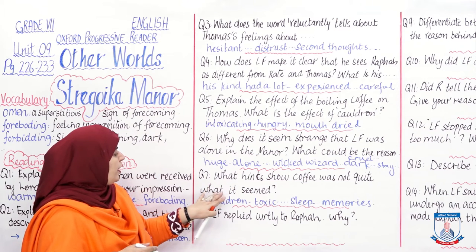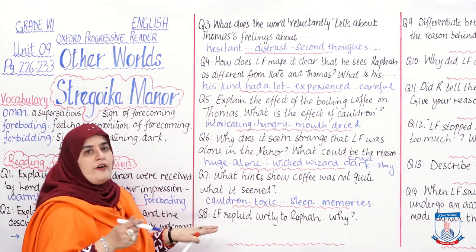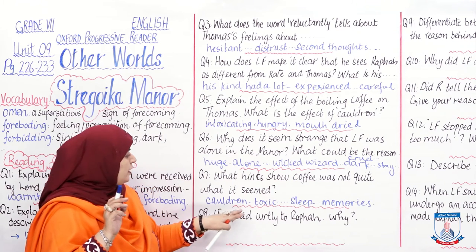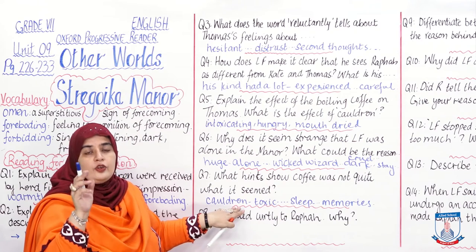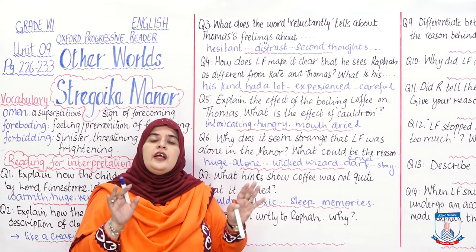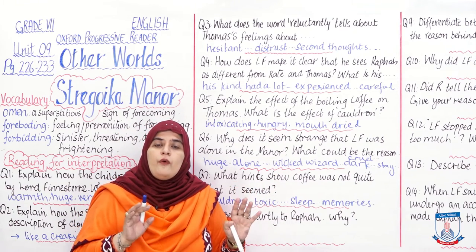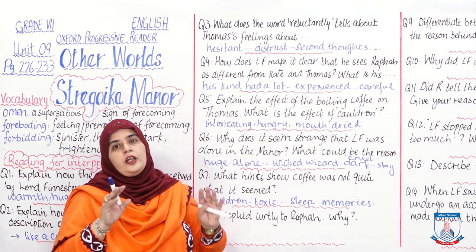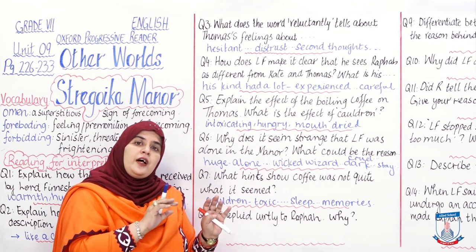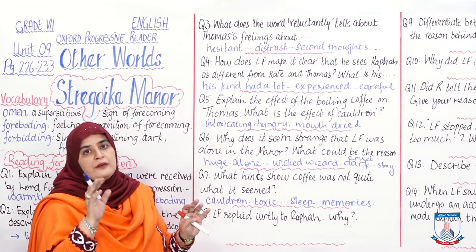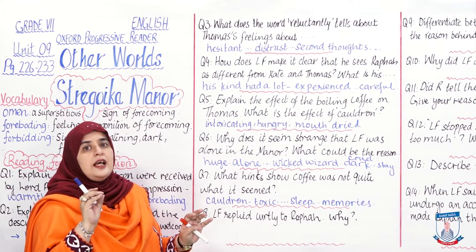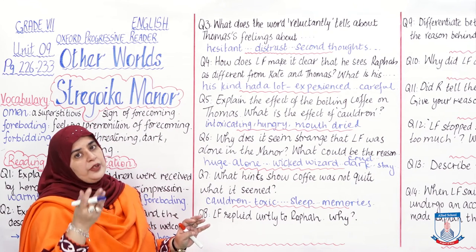Question: What hints show that the coffee was not quite what it seemed? The coffee was not quite what it seemed because the writer says it was being brewed in a cauldron and had a toxic effect — all the children were feeling sleepy. They were having memories of their own home, wanting to go back to their past life. This meant they would have been willing to do whatever Lord Fenister demanded and would bow down to his requests.